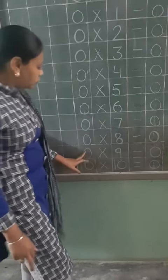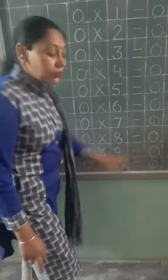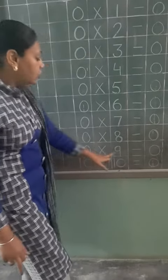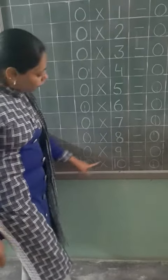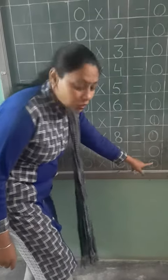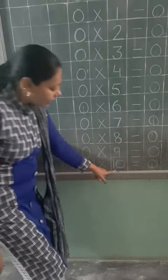Zero times eight is zero. Zero times nine is zero. Zero times ten is zero. Thank you.